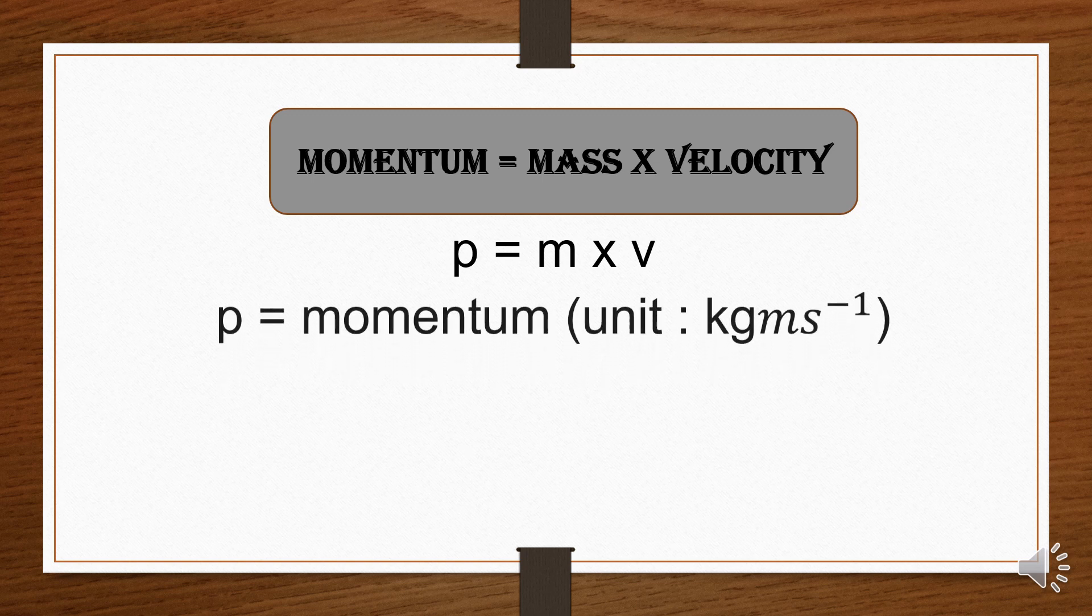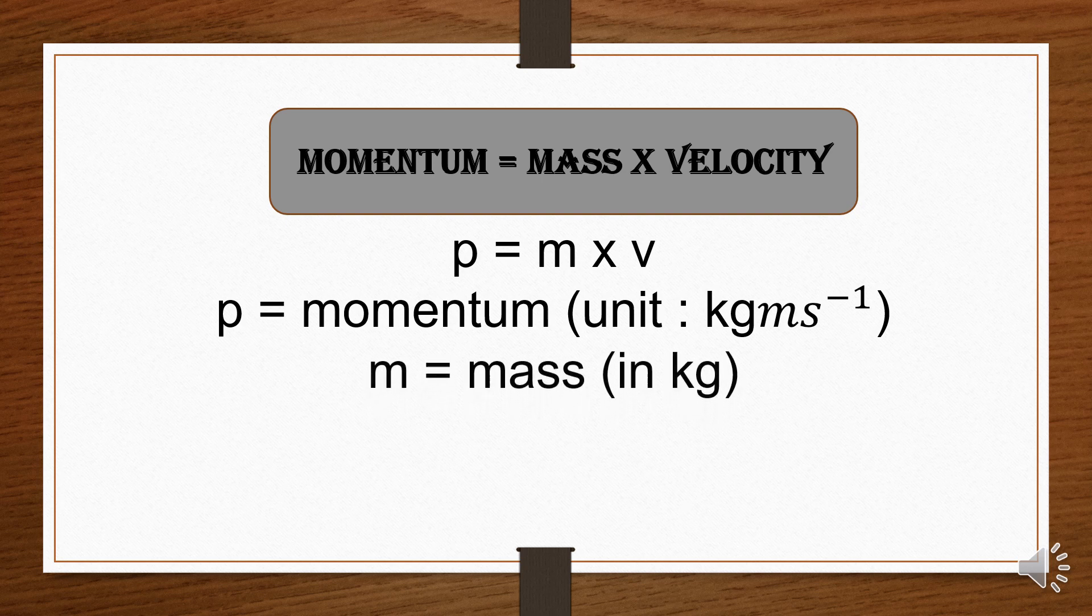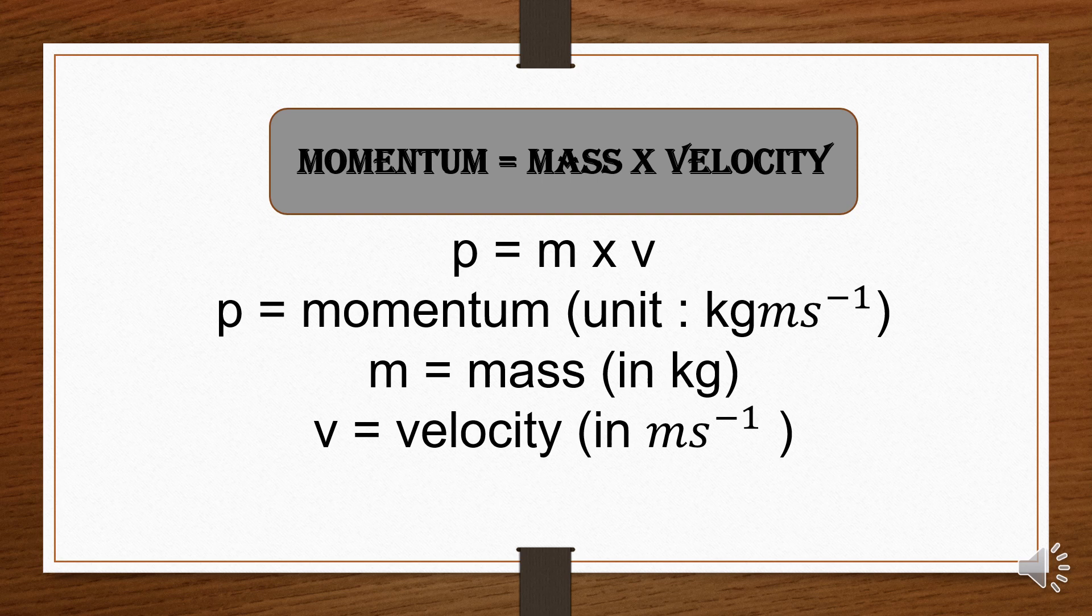Where p is momentum, m is mass in kilograms, and v is velocity in meters per second.